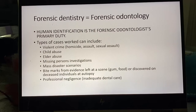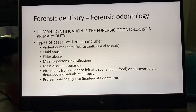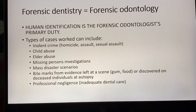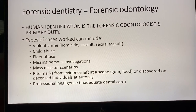Surprisingly, bite marks are seen in an incredibly large percentage of sexual assault cases. For whatever reason, during those assaults, offenders often bite their victims. If they're female victims, a lot of times bite marks are found around the breast area, but they can be found anywhere. Surprisingly, and this was shocking to me, is how often people use their teeth as weapons — we actually see bite marks in cases of child abuse and elder abuse too.